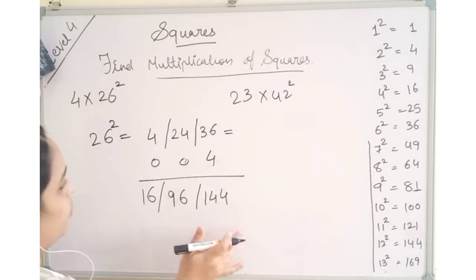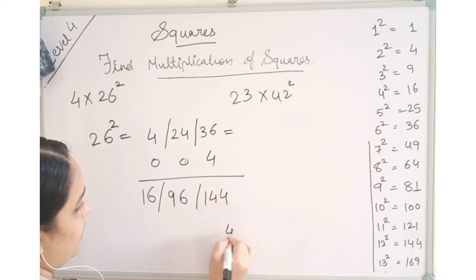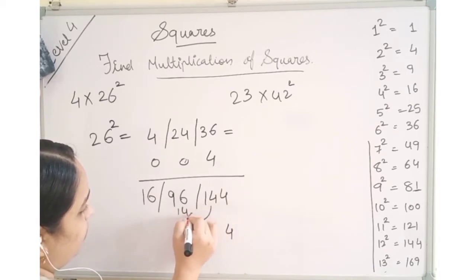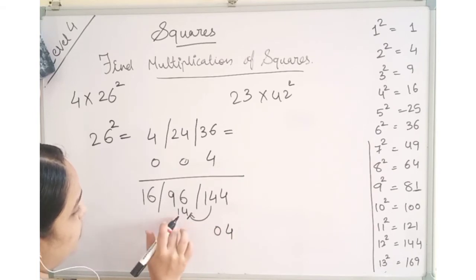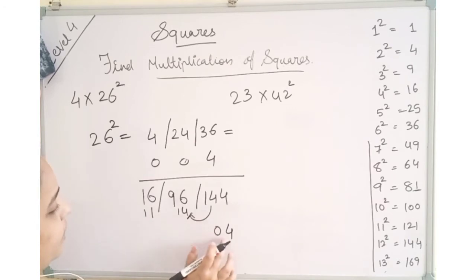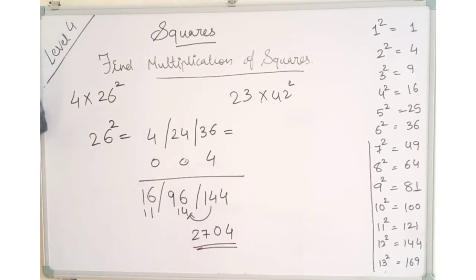Now simplify this also will also work the same way. 4 as it is. 14 went here. This will give us 0, 0 and 1. So this will become 110. Because 1, 0 and here this will give us 2, 7, 0, 4. This is the answer.